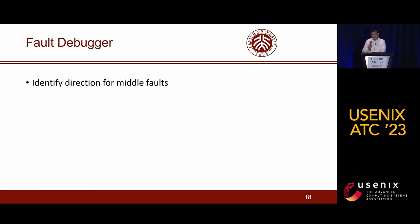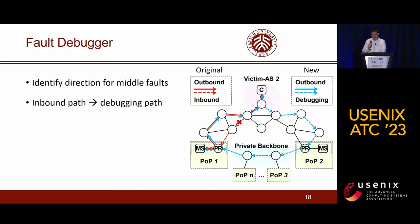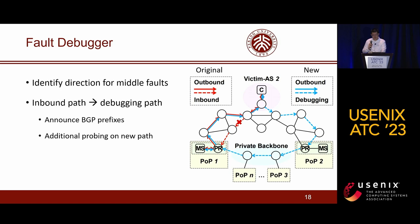For middle faults, the fault debugger then identifies their direction. The key idea is to probe a new path from each POP, which consists of the original outbound path and a debugging inbound path. The debugging path is typically a zero-fault inbound path to another POP in the Huawei Cloud. As shown on the slide, we let all peers in POP2 announce the IP prefix of the POP that goes through the new path. When a victim AS is reported suffering from a middle fault, the fault debugger triggers an additional probe on the new path, then compares the packet loss rate on the original path and on the new path to identify fault direction.